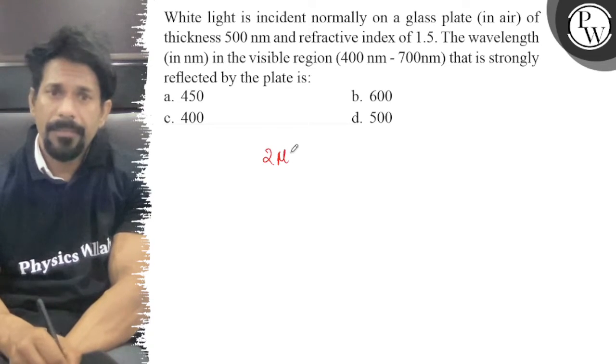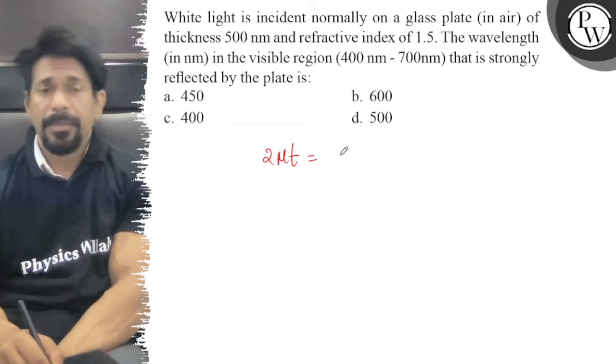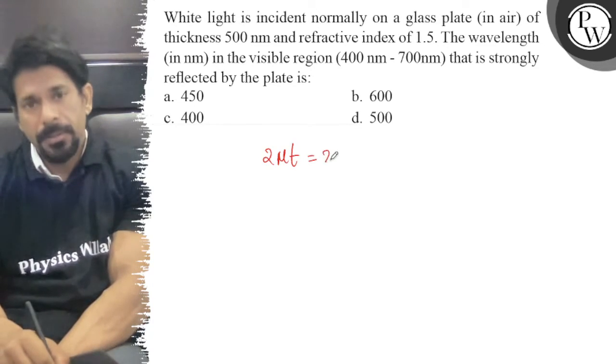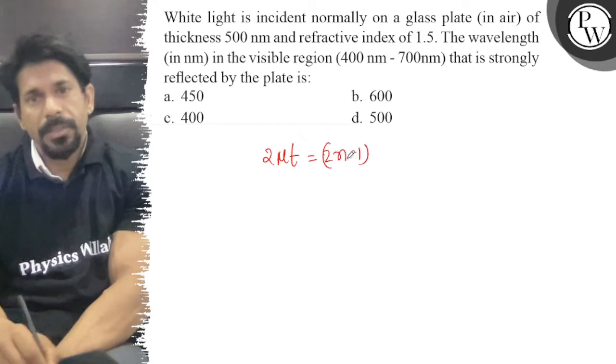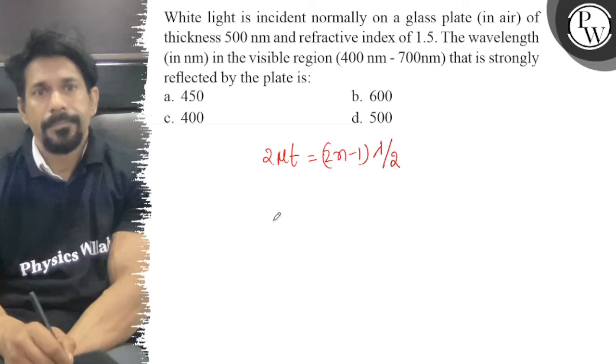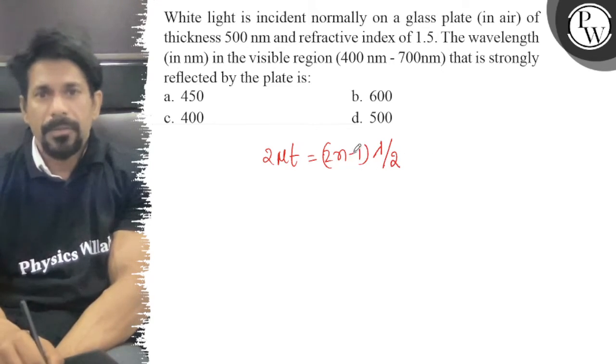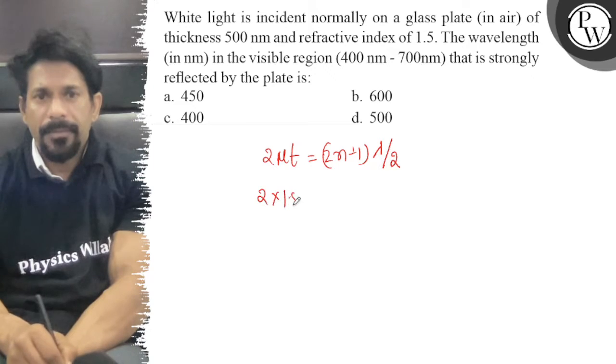So we will write the first thing that we get strongly reflected. We will write 2μt equals 2n minus 1 times lambda by 2. The value of μ is equal to 1.5 and t is equal to 500 nm.